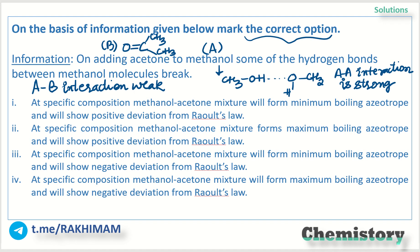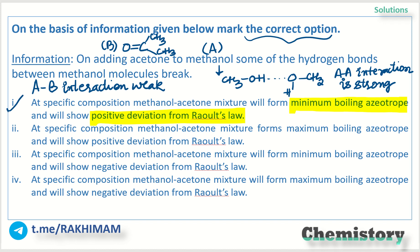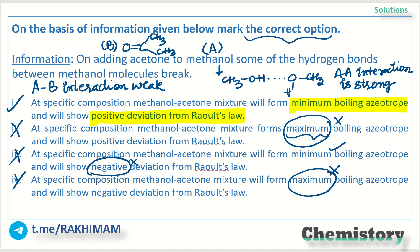Now let's look at the options. At specific composition, methanol and acetone form minimum boiling azeotropes and show positive deviation from Raoult's Law — so that option is correct. Maximum boiling azeotropes — no, that is wrong. Negative deviation from Raoult's Law — that is also wrong. These are the incorrect options, and the correct answer has been explained.